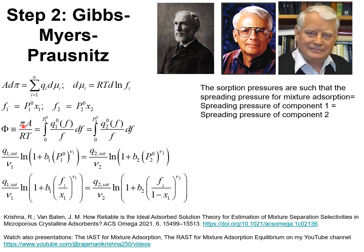The spreading pressures may be evaluated by integration of the unary isotherms for component 1 and component 2. The quantity π times the specific surface area divided by RT is also called the surface potential. The integrals may be evaluated analytically for a variety of unary isotherm fits; shown here are the integrals for the Langmuir-Freundlich fits for components 1 and 2.